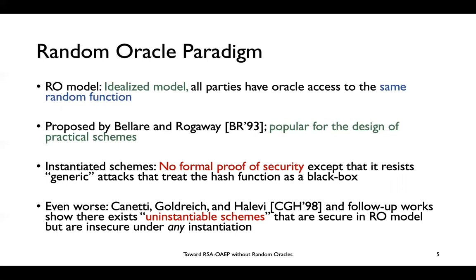Even worse, there is a work from 1998 by Canetti, Goldreich, and Halevi, and also some other works, that show that there are schemes which may be secure under the random oracle model, but if we replace the true random function with a real hash function like MD5 or SHA-1, we get insecure schemes. We call these uninstantiable schemes, and this is a very serious problem with the random oracle model.